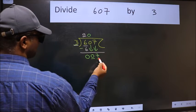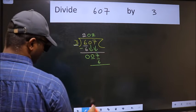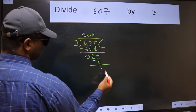Now 7. A number close to 7 in 3 table is 3 times 2 is 6. Now we should subtract. We get 1.